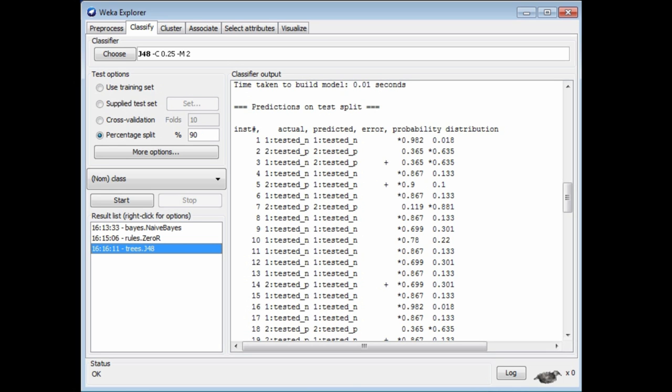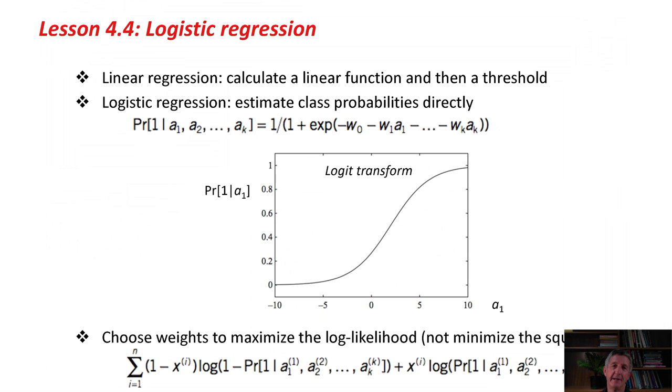The idea of logistic regression is to make linear regression produce probabilities too. This gets a little bit hairy here. Remember, when we use linear regression for classification, we calculate a linear function using regression and then we apply a threshold to decide whether it's a 0 or a 1. It's tempting to imagine that you can interpret these numbers as probabilities instead of thresholding them like that, but that's a mistake. They're not probabilities. These numbers that come out on the regression line, sometimes they're negative, sometimes they're greater than 1. They can't be probabilities because probabilities don't work like that.